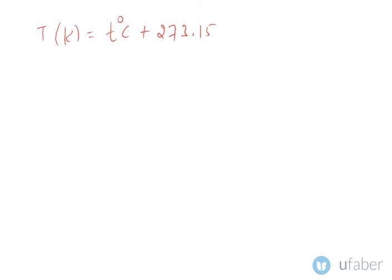This is a very common conversion. We actually use two kinds of scale to express temperature values — one is the Kelvin scale and one is the degree Celsius scale. Normally you would be given temperature in the degree Celsius form, and for engineering calculation purposes you would have to convert it into the Kelvin scale. To do that, you would have to add 273.15 to the degree Celsius value to get the Kelvin value.